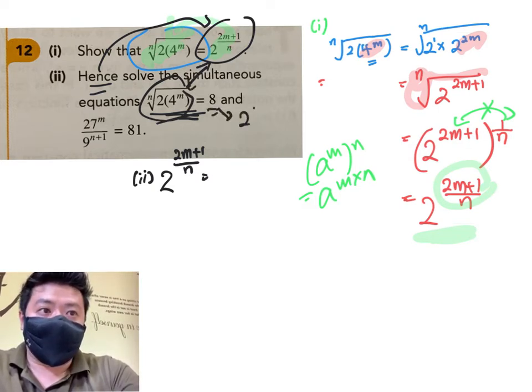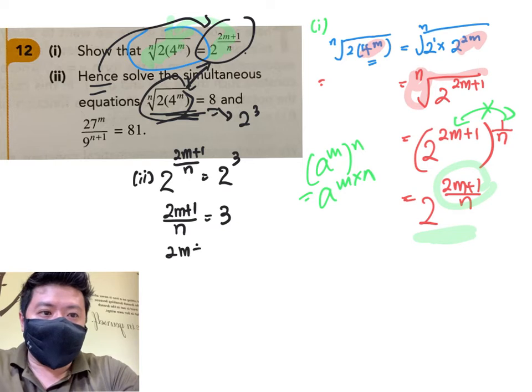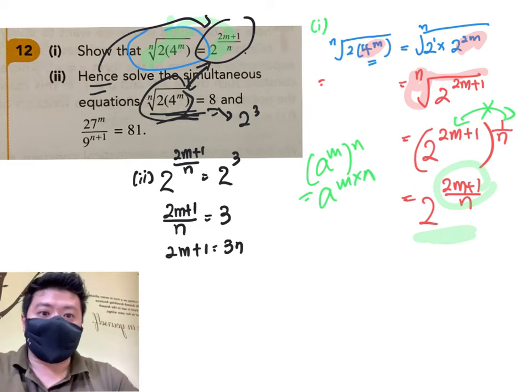equals to 8. Now 8 is the same as 2 to the power of 3. This also means that straight away, if I equate the indices, 2m plus 1 over n equals 3. 2m plus 1 equals 3n. And this is my first equation.